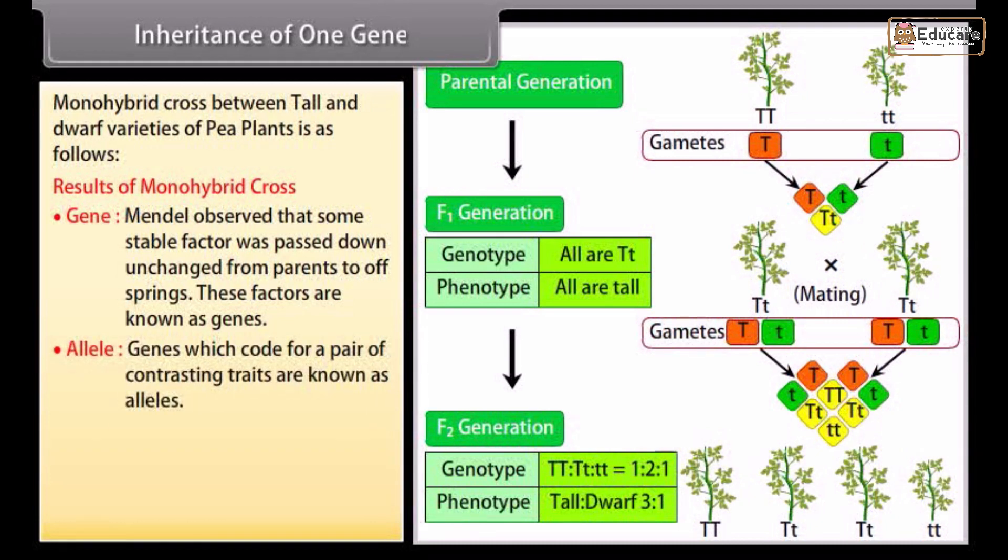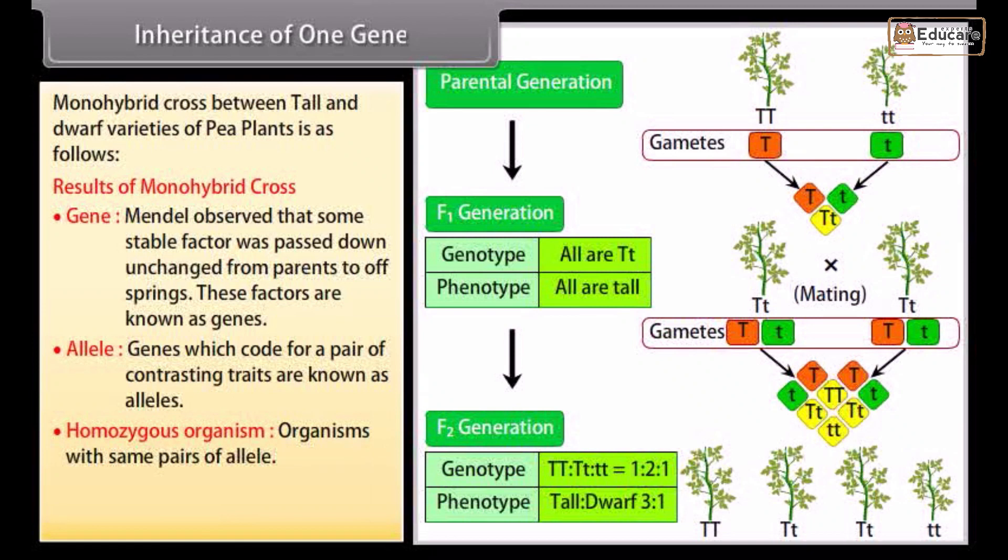Allele: Genes which code for a pair of contrasting traits are known as alleles. Homozygous organism: Organisms with same pairs of alleles.